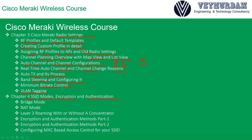Chapter 4 is about SSID modes, encryption, and authentication. You will learn how to configure SSID modes, why you need to configure them, and what options you have — for example, some content filtering features are not available with certain SSID modes. After bridge mode and NAT mode, we will go over Layer 3 roaming with and without a concentrator, and how to configure these on the Meraki dashboard.